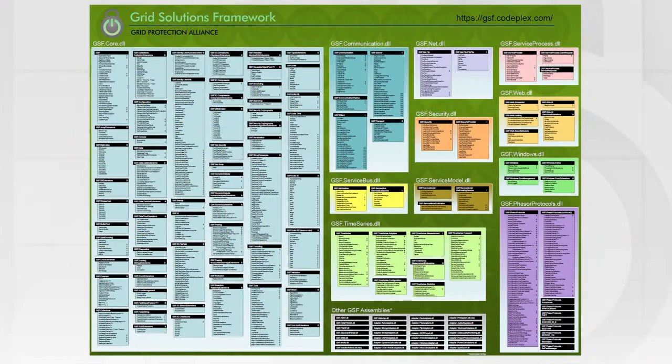All GPA products are built on a common set of open source code called the Grid Solutions Framework, or GSF. The Grid Solutions Framework is an extensive collection of .NET code that runs on both Windows and POSIX platforms. It's used by various power utilities and other open source projects.